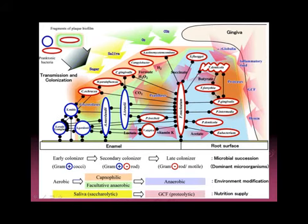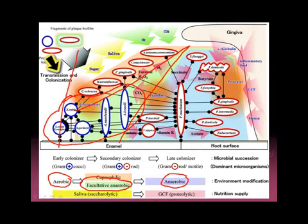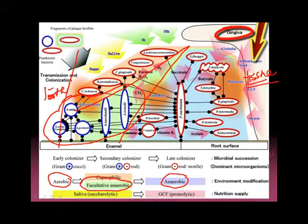In summary, initial colonizers are gram-positive and mostly aerobic or facultatively anaerobic. Facultatively anaerobic means they can live in aerobic as well as anaerobic environments. Late colonizers are anaerobic. Initial colonizers use up sugar from saliva and food; late colonizers come close to the tissue and use proteins from GCF for their nutrition supply.